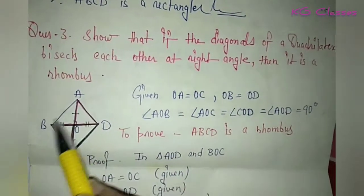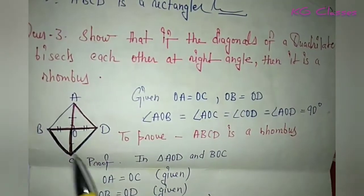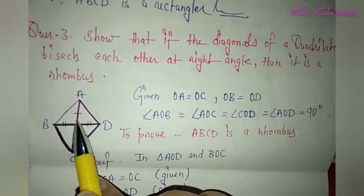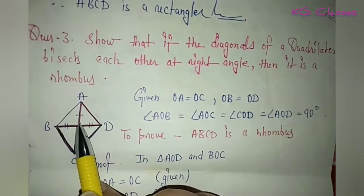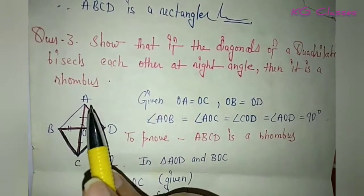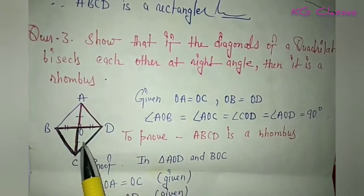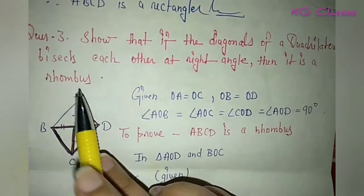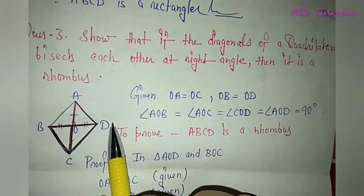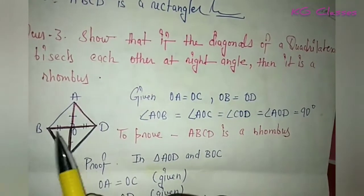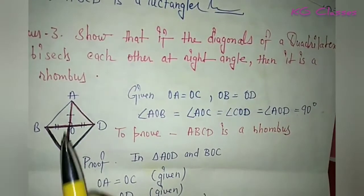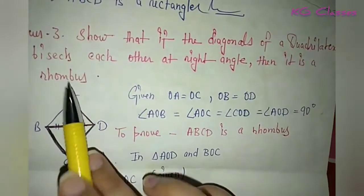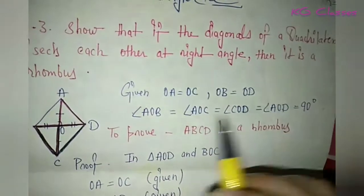So, given — what is given? We have made a quadrilateral ABCD. Given: we have the diagonals intersecting at 90 degrees. So given is that OA equals OC and OB equals OD. And what is also given: angle AOD equals angle DOC equals angle COB equals angle BOA, all equal to 90 degrees.